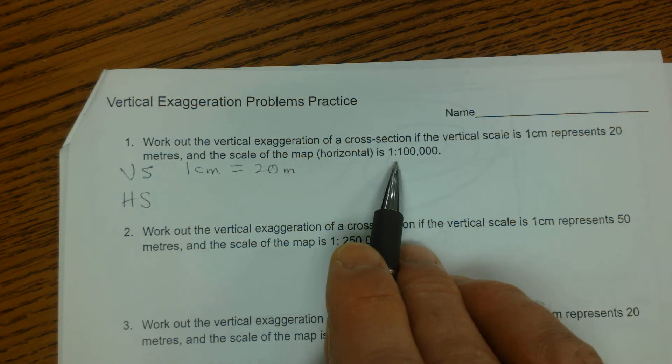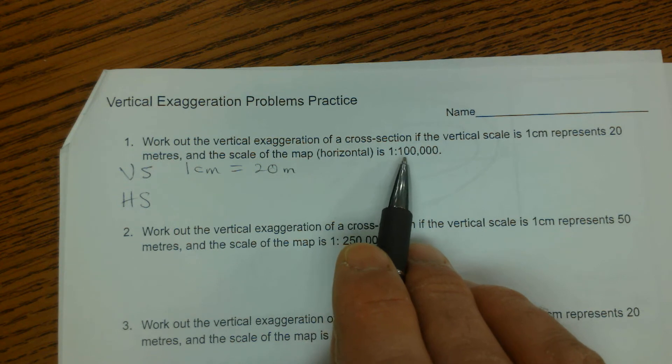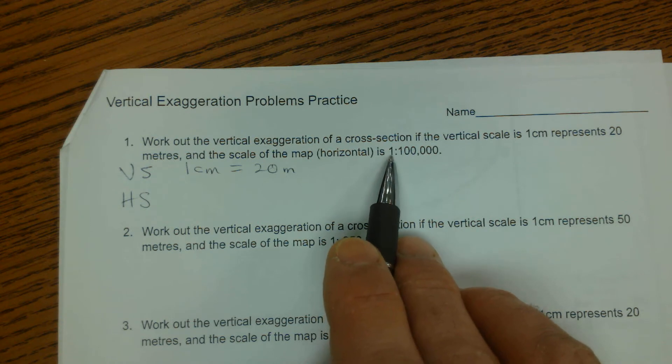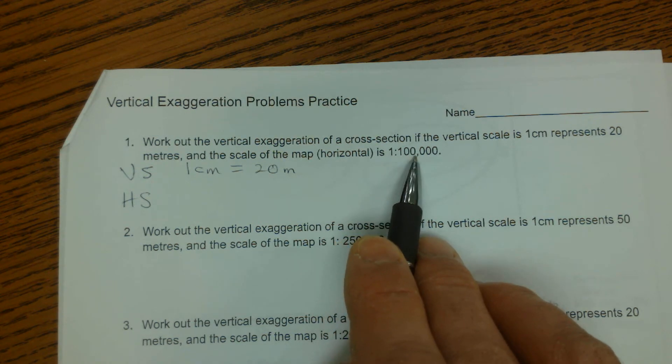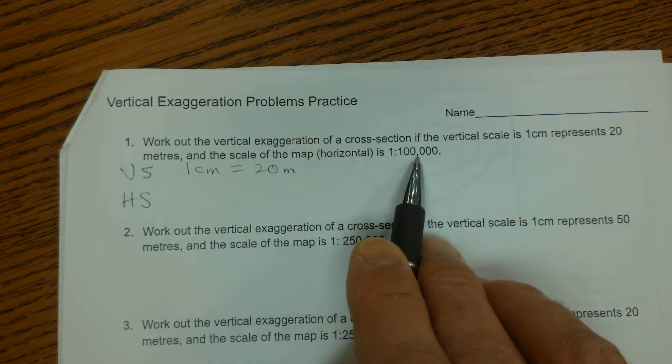And when you see a representative fraction, that means that you can choose whatever unit you want, but it has to apply to both parts. So if you say this is centimeters, this means that your map has a scale where every 1 centimeter represents 100,000 centimeters, or you could say 1 inch represents 100,000 inches.